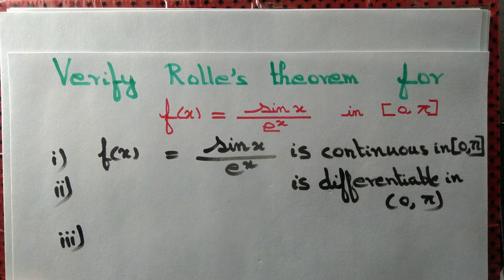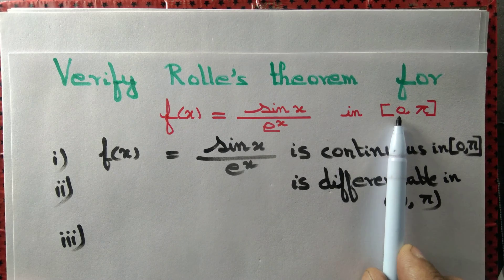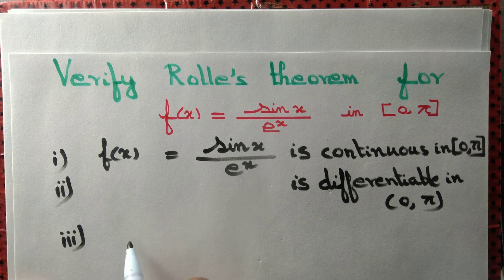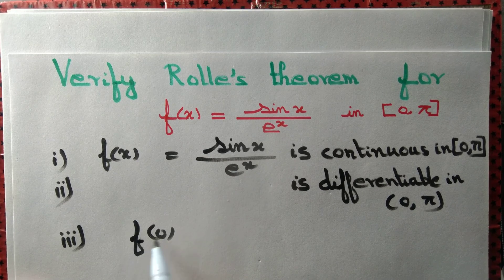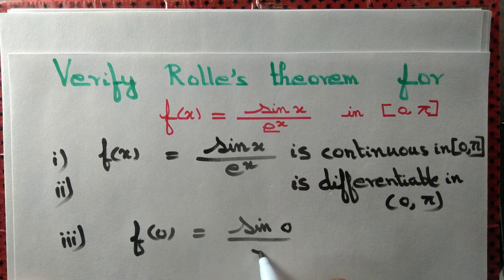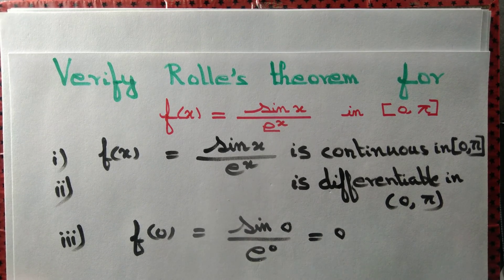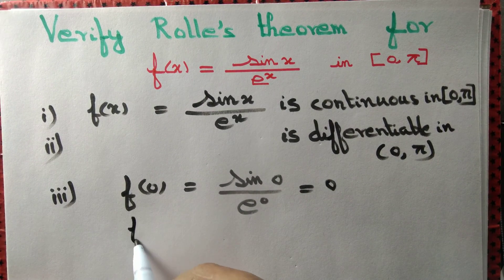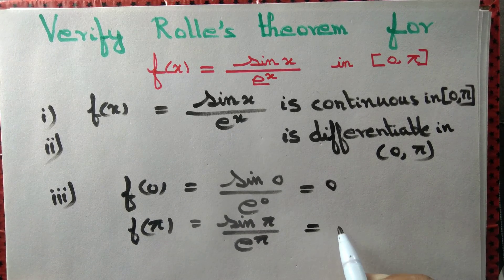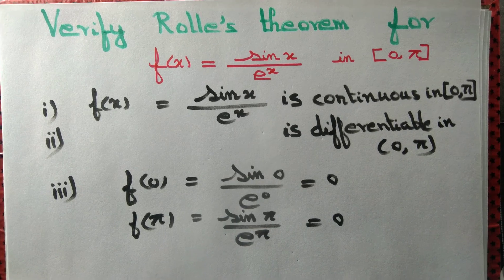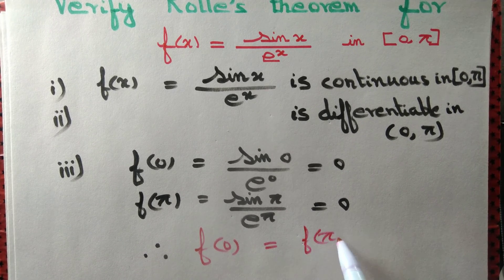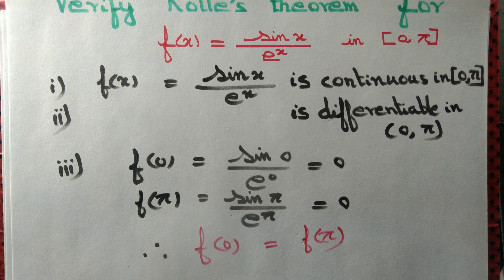Third, the value of the function at the endpoints must be equal. The endpoints of this interval are 0 and π. f(0) = sin(0) / e^0 = 0. f(π) = sin(π) / e^π = 0 / e^π = 0. Therefore, f(0) = f(π); the values of the function at the endpoints are equal.